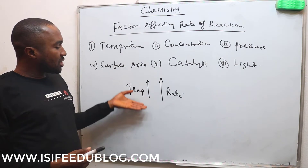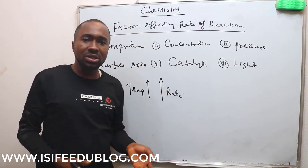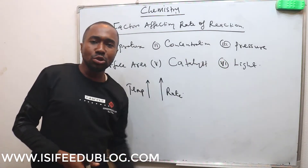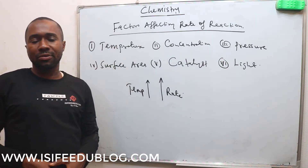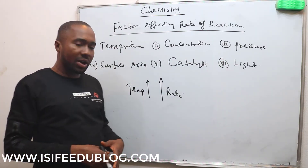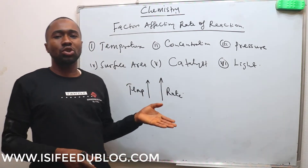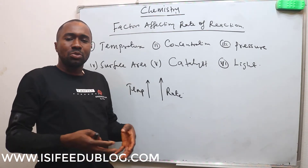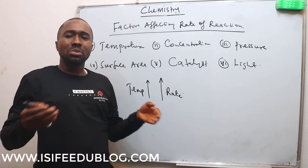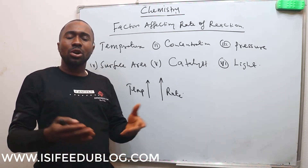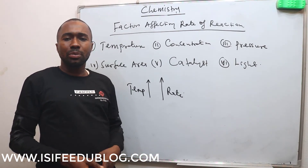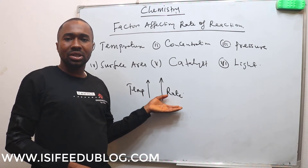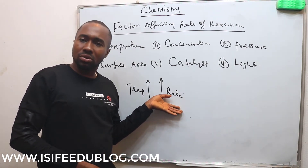When the average kinetic energy of the reactant particles increases, the rate of collision will also increase, thereby leading to more product formation in a shorter period of time. Also, when you increase the temperature, you are breaking the bonds — the bonds become weak. And once the bonds are weak, the reactants can easily combine together to form a product.